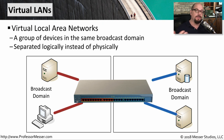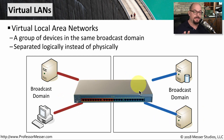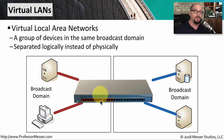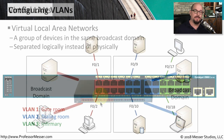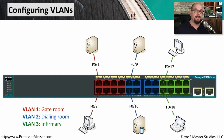This is called a virtual LAN or a VLAN. We're still able to segment the network — these devices are still in separate broadcast domains. And these devices still can't communicate with each other because there is a logical separation between these VLANs. It's not uncommon to configure many different VLANs on a single physical switch.